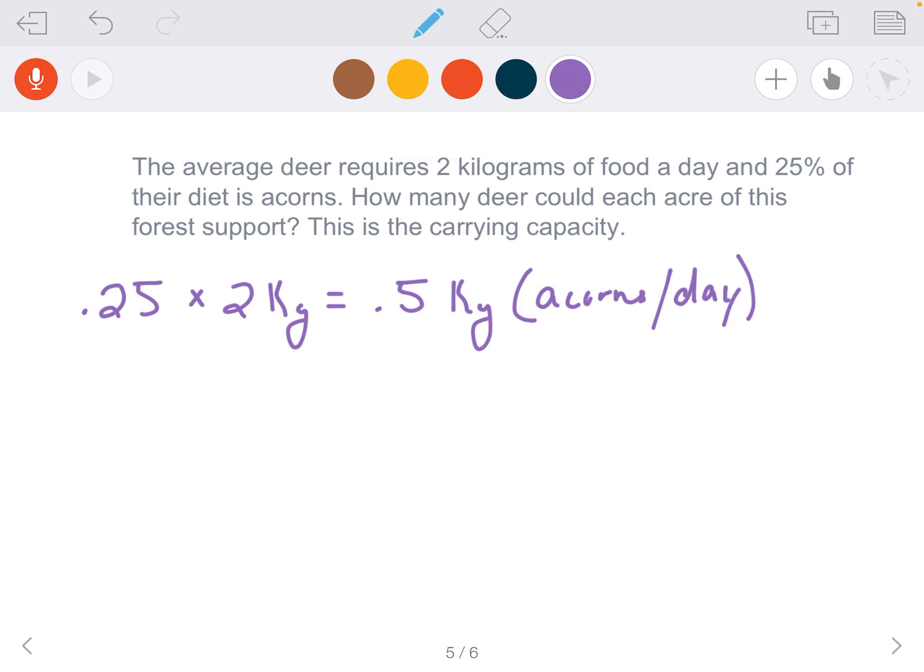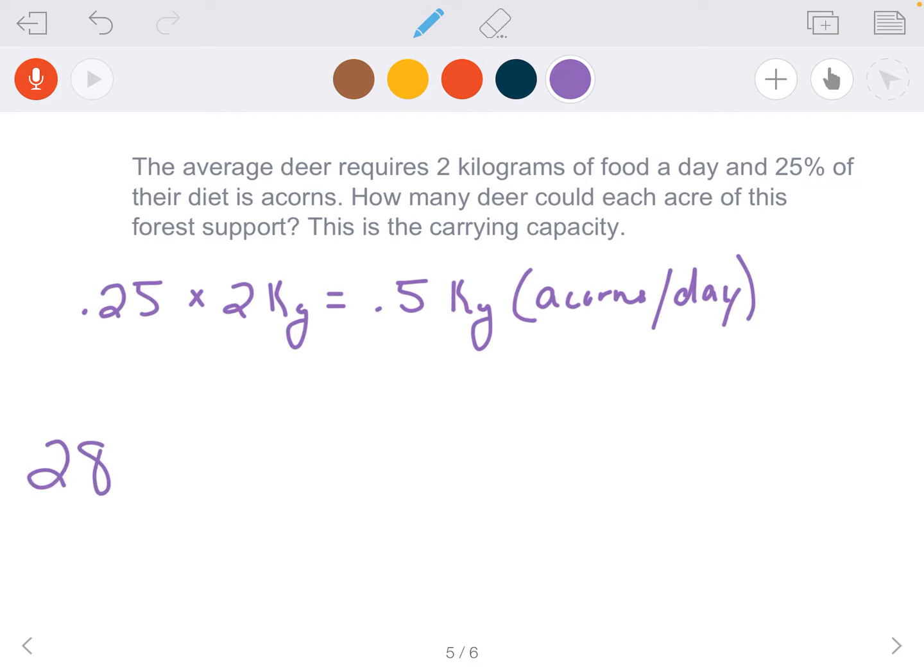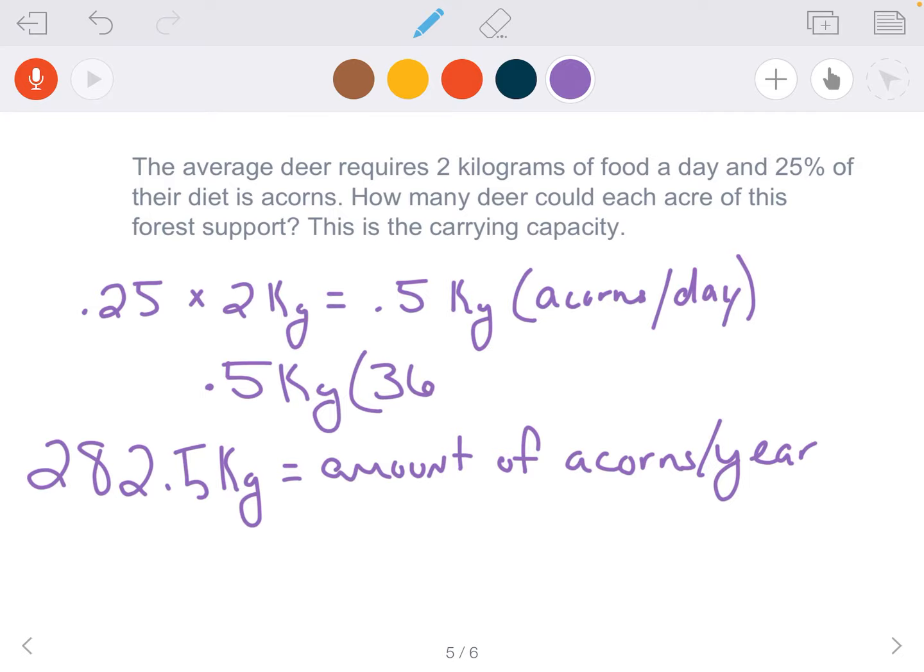Now if we remember how much our forest is actually making per year, it's 282.5 kilograms—that's the amount of acorns per year produced in this particular forest. Knowing that our deer needs to consume 0.5 kilograms a day, we need to take 0.5 kilograms and multiply it by 365 days. That means this forest has to be able to produce a minimum of 182.5 kilograms per year to support one deer.